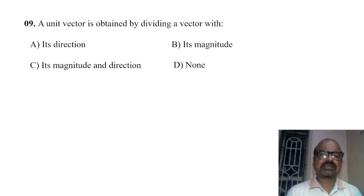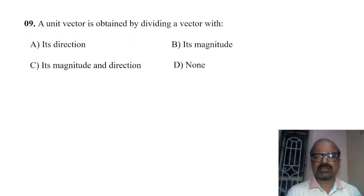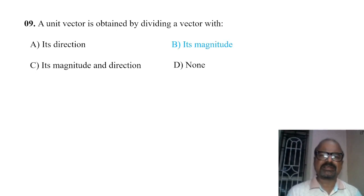Next, a unit vector is obtained by dividing a vector by its magnitude.